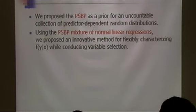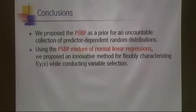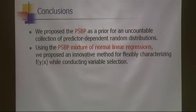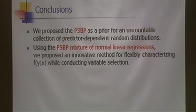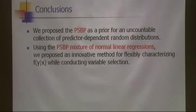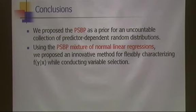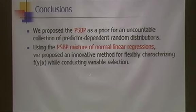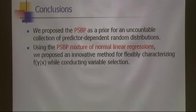In conclusion: we propose the Probit Stick-Breaking Process (PSBP) as a prior for a collection of predictor-dependent random distributions. Using the PSBP mixture of normal linear regressions, we propose an innovative method that simultaneously performs flexible conditional density estimation and variable selection (hypothesis testing). There is no existing method that does both together — many nonlinear regression models do flexible estimation but not hypothesis testing, and no prior literature addresses variable selection in a conditional distribution estimation setting.